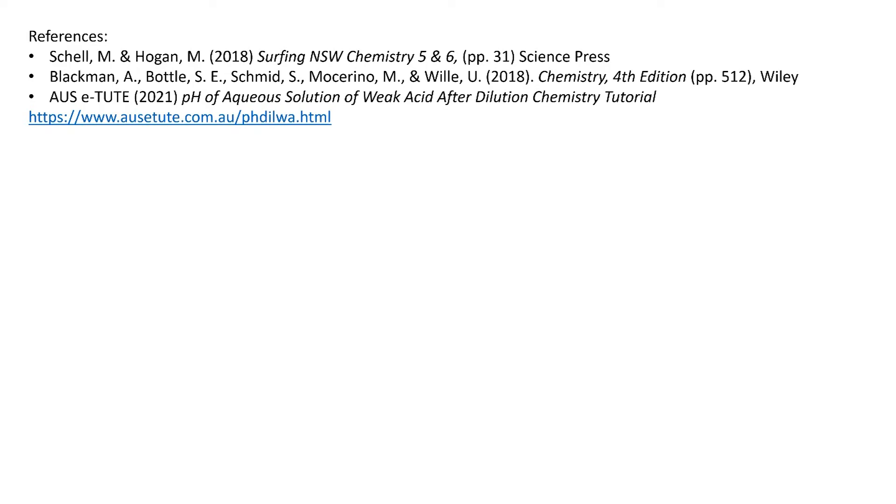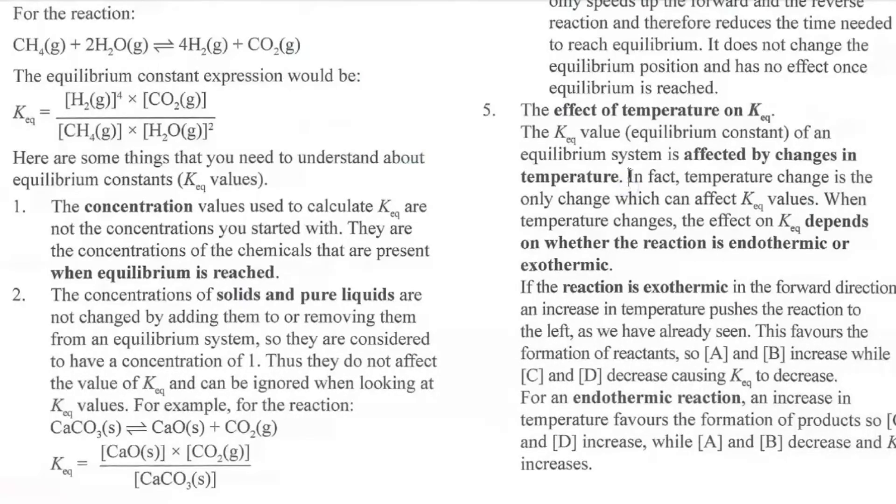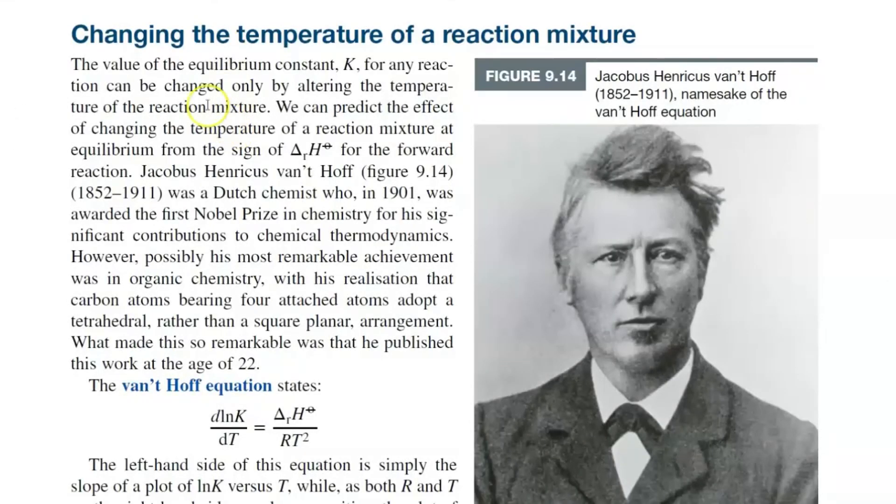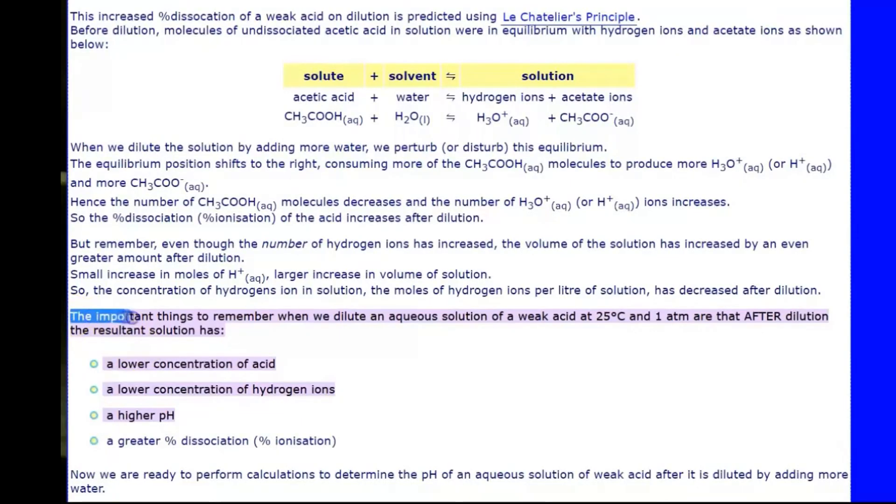A number of the references used for this video are seen here, and we can verify our answer by looking at the text itself. Looking at Surfing Chemistry from Sheldon Hogan, we can see the effect of temperature on the equilibrium constant is that temperature change is the only change we can affect the value of the equilibrium constant. Looking at Chemistry from Blackman et al., this is again verified that the value of the equilibrium constant K for any reaction can only be changed by altering the temperature of the reaction. The Aussie Tune website has a very good summary on the effects of diluting a weak acid, and we can see here that amongst the number of different effects is that the acid ionization, or the percent ionization, increases as you dilute.